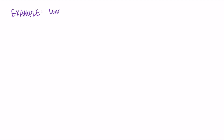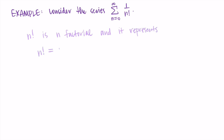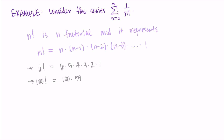Let's do one more example, and then at the end I'll show you the ratio test written out formally. Consider the series: the sum from n equals 0 to infinity of 1 over n factorial. The n with the exclamation point is n factorial — it represents n times (n minus 1) times (n minus 2), and so on, all the way down to 1. So 6 factorial is 6 times 5 times 4 times 3 times 2 times 1, and 100 factorial is 100 times 99 times 98 times 97, and so on. Factorial notation represents a really long product, and it gets very large very fast.